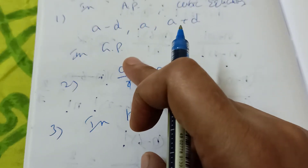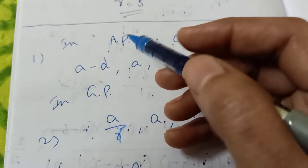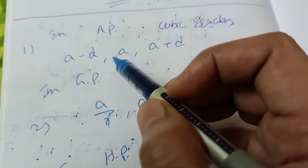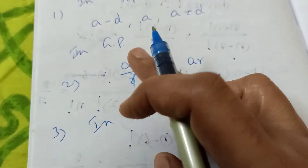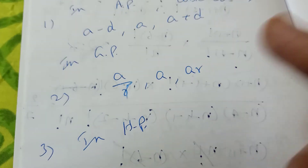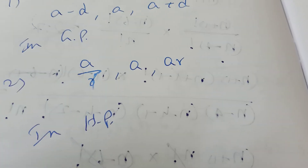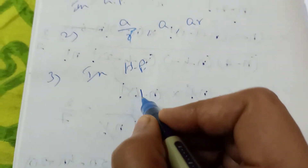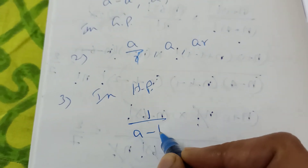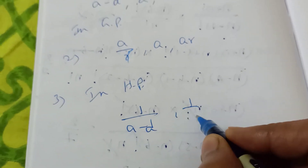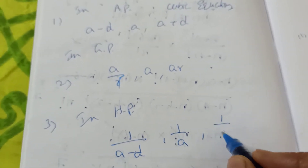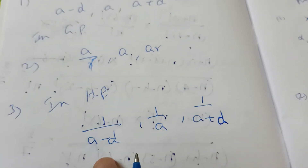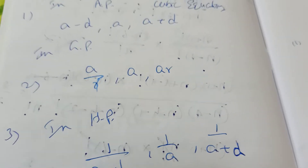For HP — harmonic progression — which is the reciprocal of AP: AP has equal common differences, GP involves multiplication, and HP is the reciprocal of AP. So HP roots are taken as 1/(a − d), 1/a, 1/(a + d).